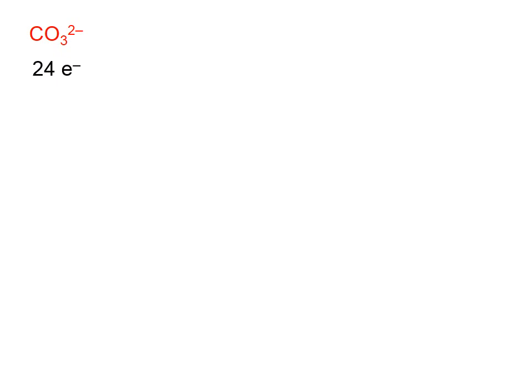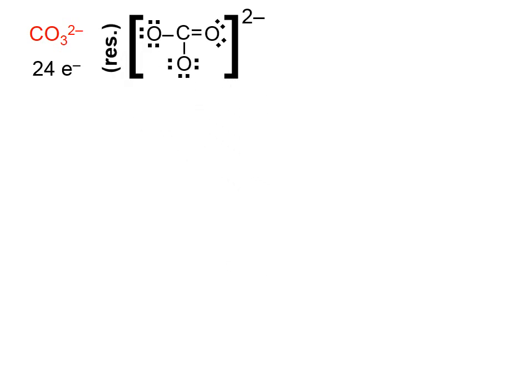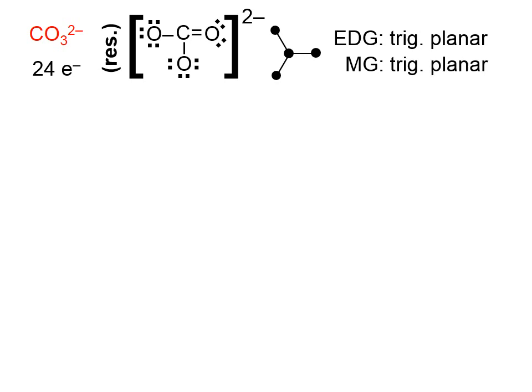This is the carbonate ion. There are 24 valence electrons to consider when drawing the Lewis structure. Since this ion exhibits resonance, we should draw additional Lewis structures, but I'll just note that resonance is present. Counting electron domains — recall that multiple bonds count as a single domain — the double bond is one domain, and then two single bonds, for a total of three. So the electron domain geometry is trigonal planar. Since there is an atom at the end of each domain, all bonding, the molecular geometry is also trigonal planar.